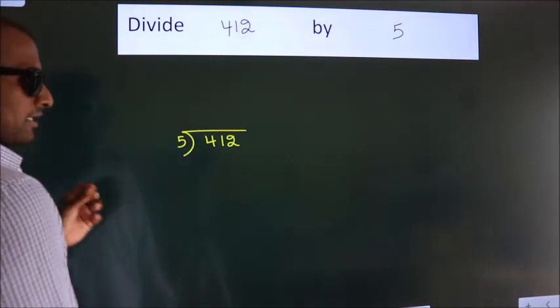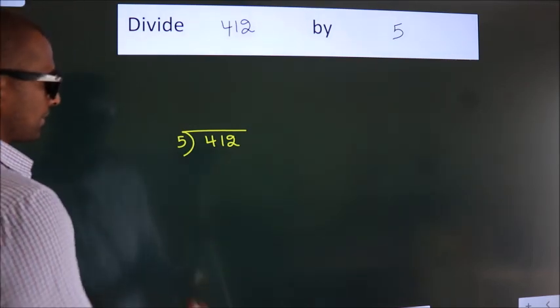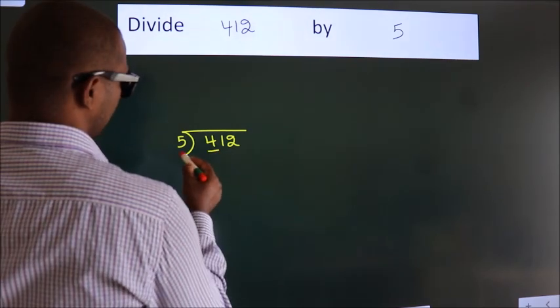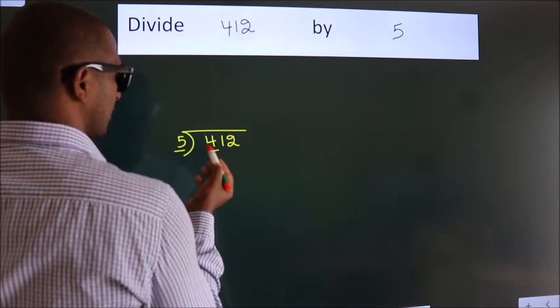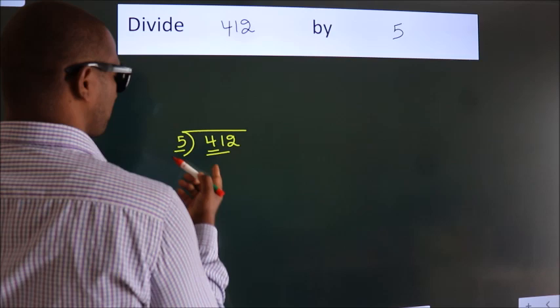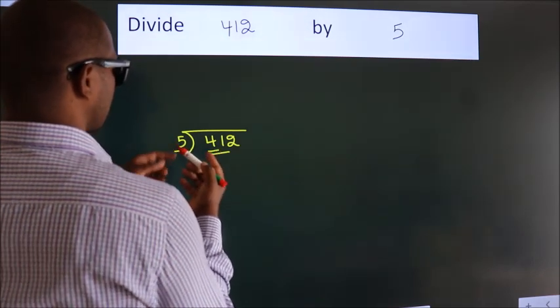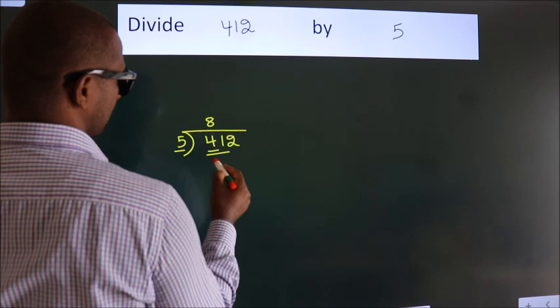This is your step 1. Next, here we have 4, here 5. 4 is smaller than 5, so we should take 2 numbers: 41. A number close to 41 in the 5 table is 5 times 8 equals 40.